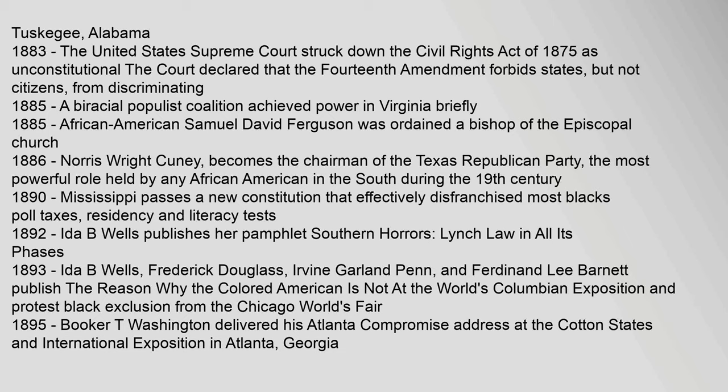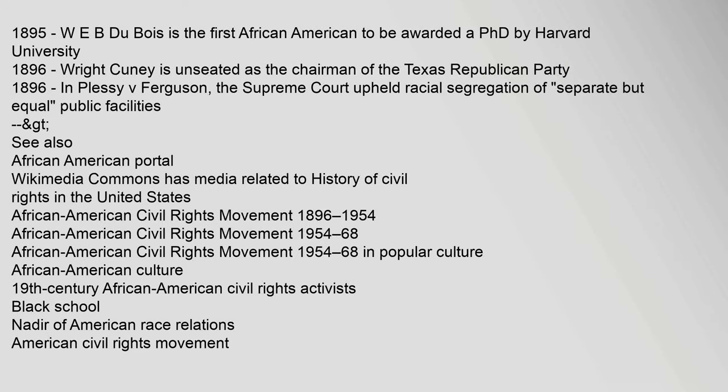In 1893, Ida B. Wells, Frederick Douglass, Irvine Garland Penn, and Ferdinand Lee Barnett published 'The Reason Why the Colored American Is Not at the World's Columbian Exposition,' protesting black exclusion from the Chicago World's Fair. In 1895, Booker T. Washington delivered his Atlanta Compromise address at the Cotton States and International Exposition in Atlanta, Georgia. Also in 1895, W.E.B. Du Bois became the first African American to be awarded a Ph.D. by Harvard University. In 1896, Wright Cuney was unseated as chairman of the Texas Republican Party. Also in 1896, in Plessy v. Ferguson, the Supreme Court upheld racial segregation of separate but equal public facilities.